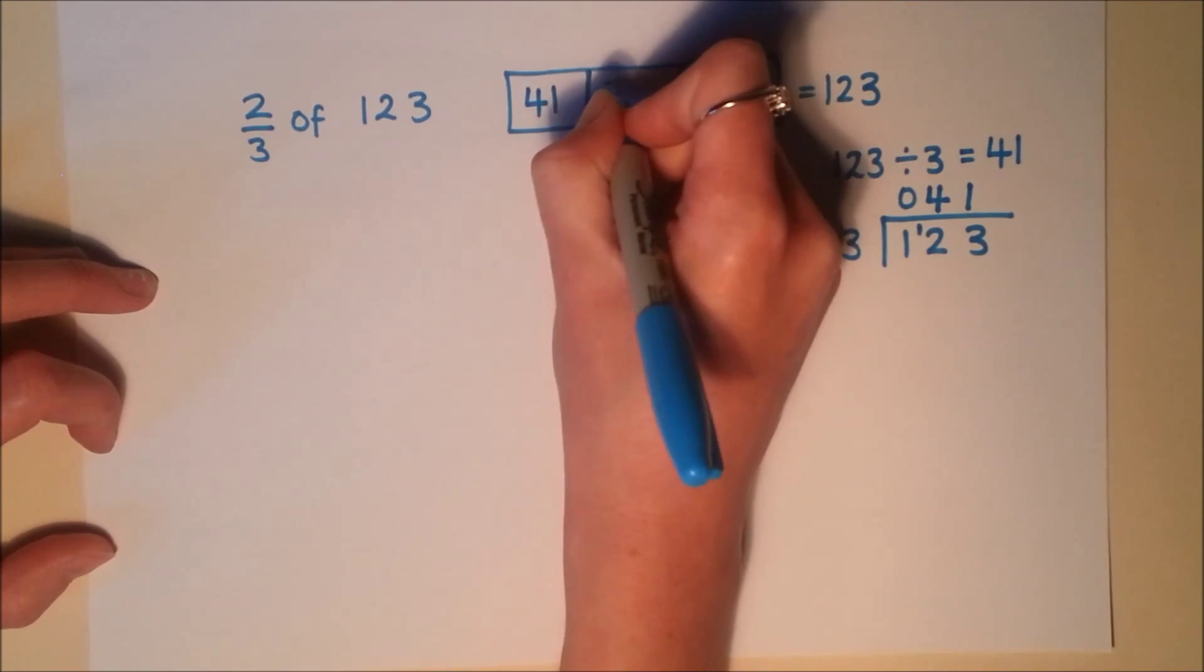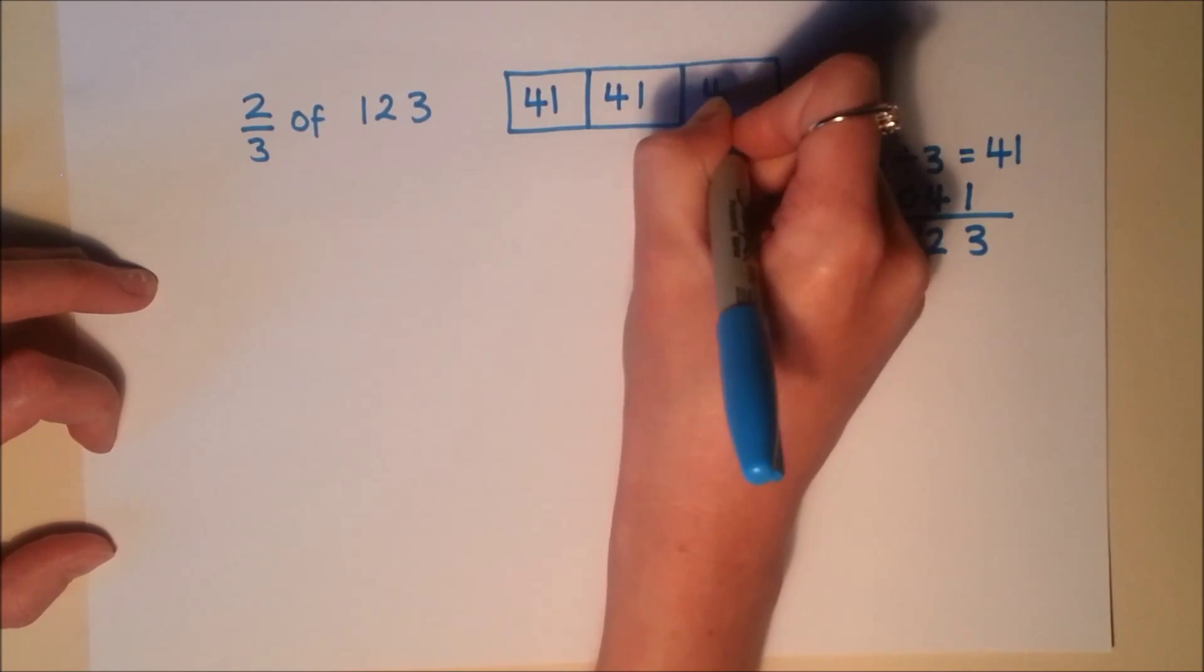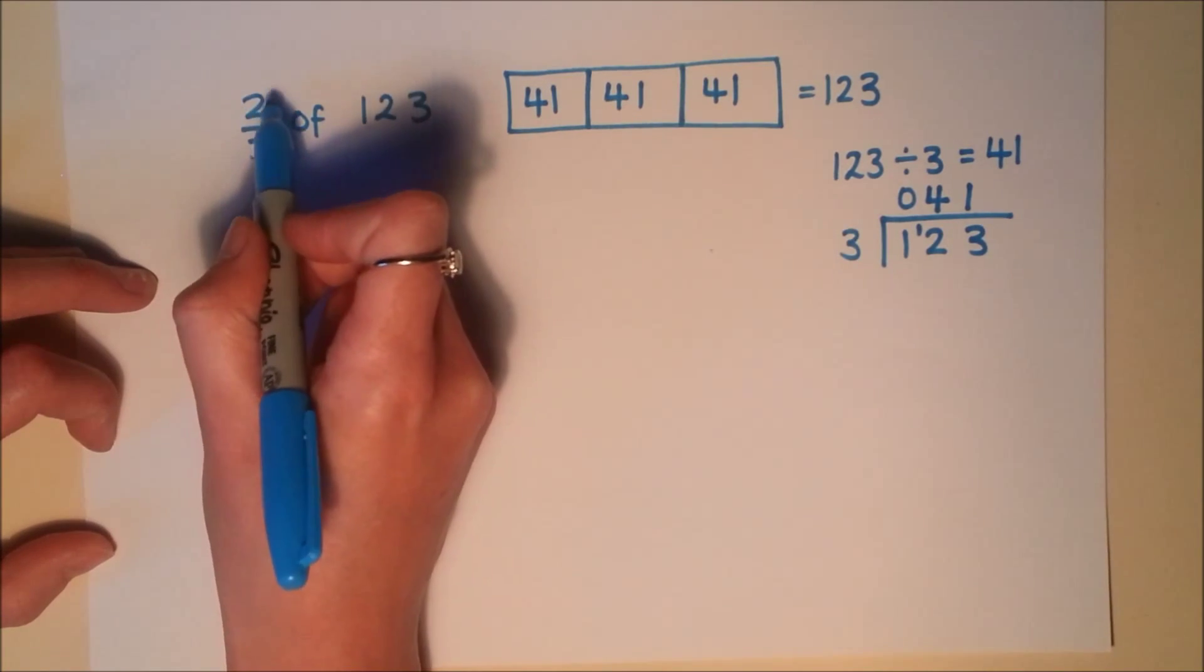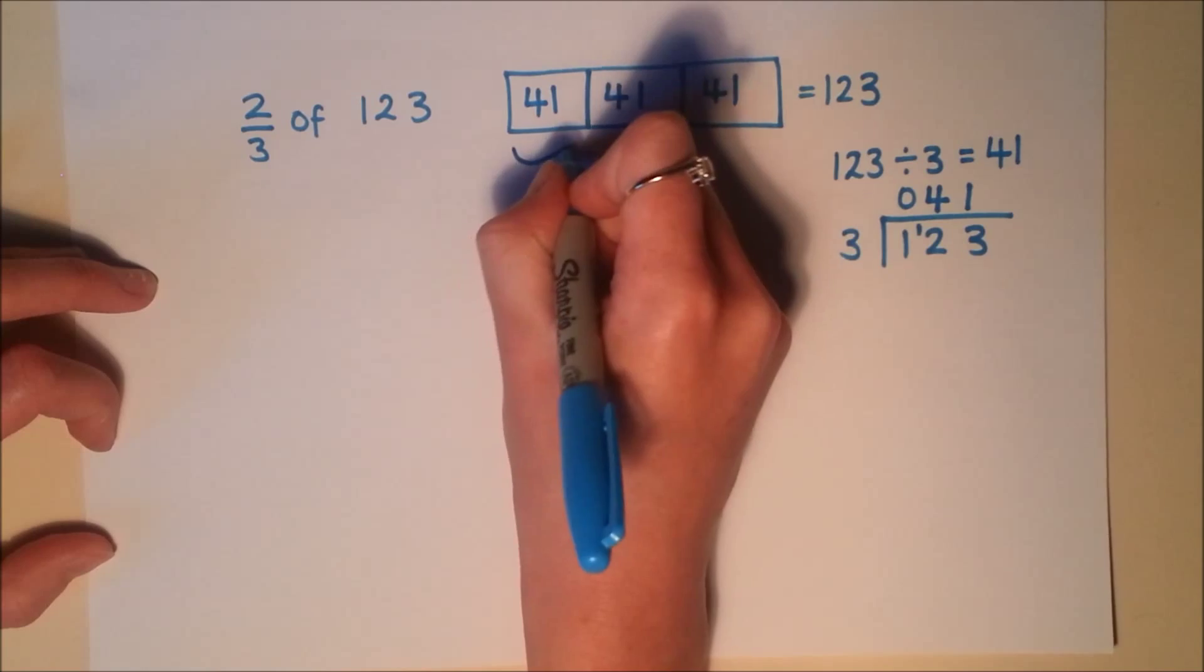So I know that I can get 41 threes into 123. So each part on here is worth 41. Now, if I look at my numerator, I need 2 parts.